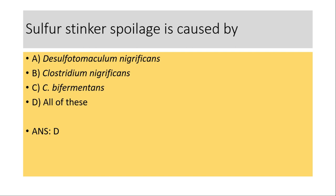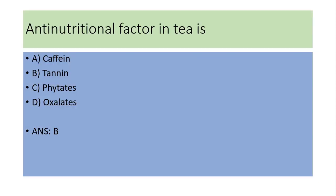Sulfur stinker spoilage is caused by — (a) Desulfotomaculum nigrificans, (b) Clostridium nigrificans, (c) Clostridium bifermentans, (d) All of these. The answer is (d) all of these. This one we have also discussed in a separate video.